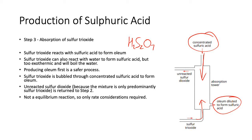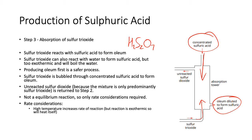It's not an equilibrium reaction again, so only rate considerations are required. A high temperature increases rate of reaction, but the reaction is exothermic so it will heat itself. Effectively, this is not an important step for maximizing yield — you're not going to lose much here. A high concentration of sulfuric acid will ensure all the sulfur trioxide is absorbed and turned into oleum.